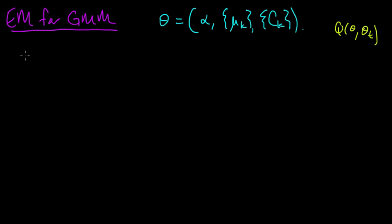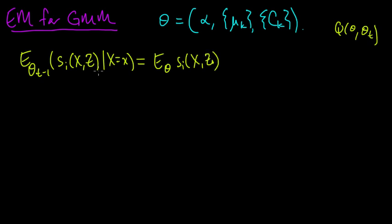Let's remind ourselves what that formulation of EM looked like for exponential families. We had the expectation with respect to theta_(T-1) of the i-th sufficient statistic, and that was a function of x and z given that x equals little x, equaled the expectation using theta as the parameter of just the i-th sufficient statistic. At the general step of the iteration, we need to solve for theta_T with theta_(T-1) already known or computed.